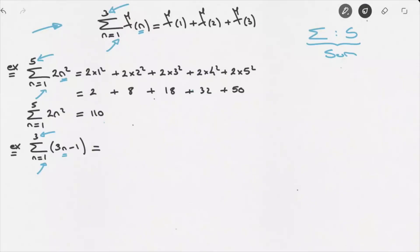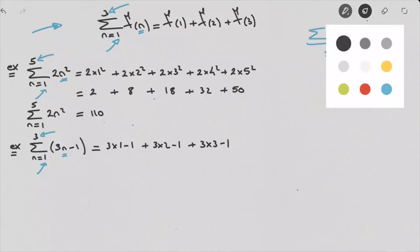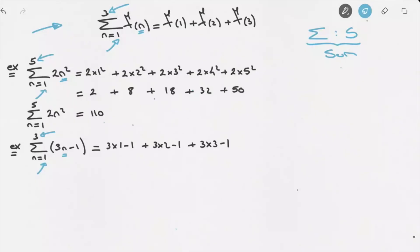So to begin with, the case when n equals 1 would look like 3 times 1 minus 1. We then add to that the case when n equals 2, so that would be 3 times 2 minus 1. We then add to that the case when n equals 3, so 3 times 3 minus 1. Just to clarify, each of these corresponds to a certain value of n: the first is n equals 1, the second is n equals 2, and this last one is n equals 3.